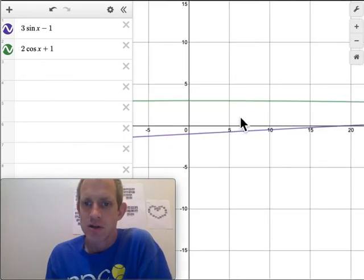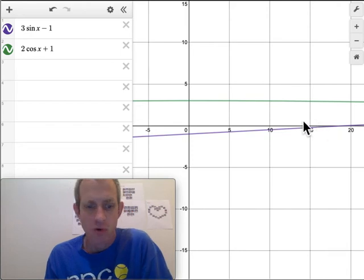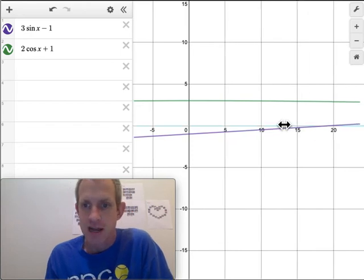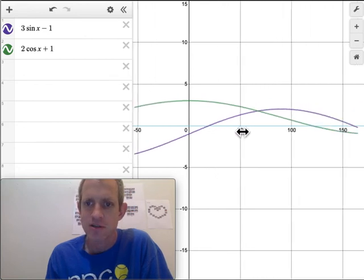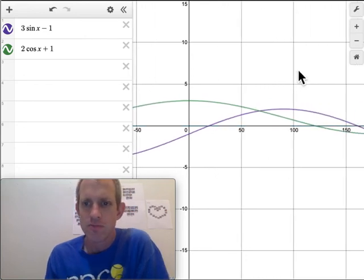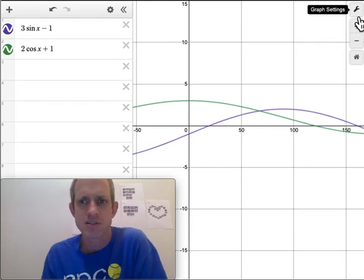And so what you ought to do is either hold shift and drag the x-axis. Grab the x-axis while holding shift and you can drag it like this. Or a faster, better, more precise way, I suppose, is to hit the wrench.